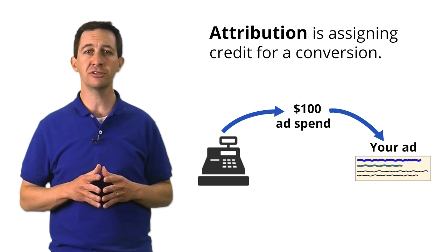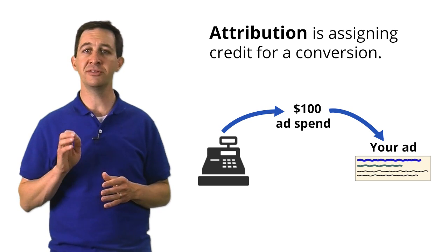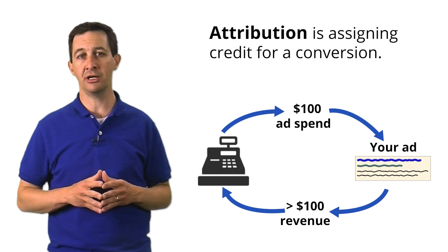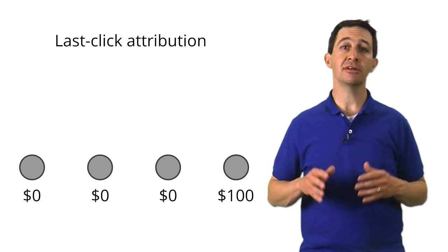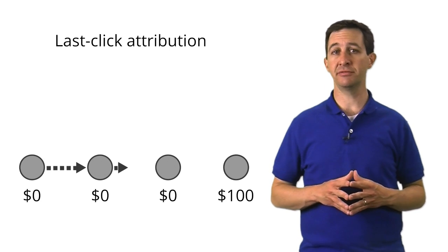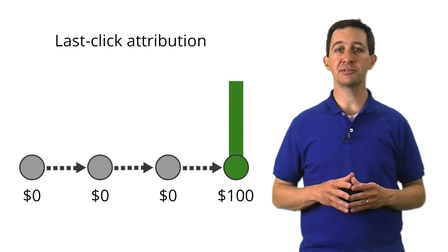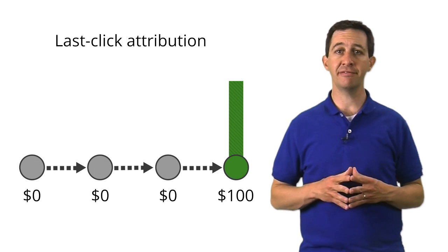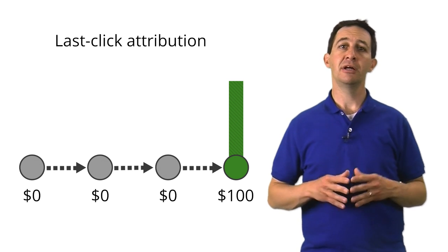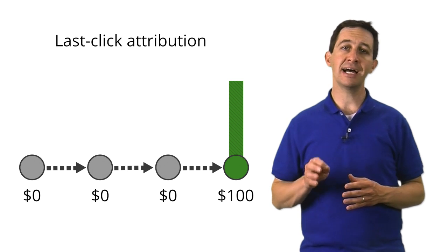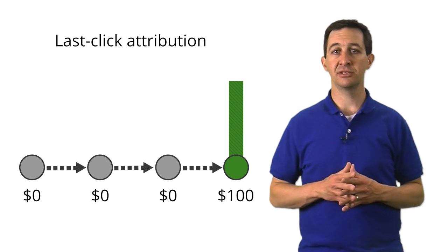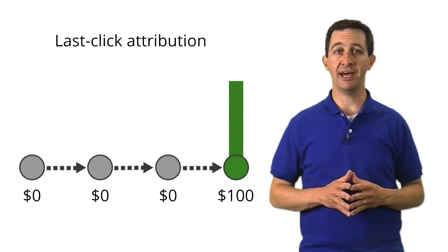If we spend $100 on a marketing activity, our hope is that we will generate more than $100 in revenue. The most common type of attribution is called last click attribution. Last click means that all of the value associated with the conversion is assigned to the last marketing activity that generated the revenue — the last marketing activity gets all the credit.